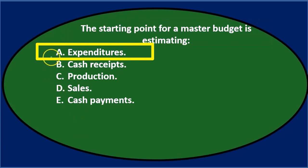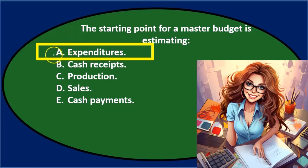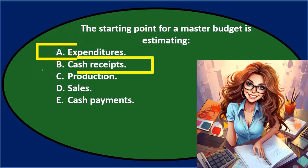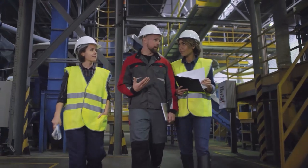We want to start somewhere like the top of the income statement, which begins with revenue — the sales line. So not expenditures, and not the middle area. Cash receipts might seem like a good place to start since that's money coming in. Production is also somewhere towards the top, so we'll keep that for now.